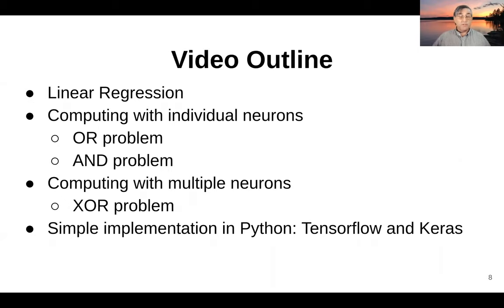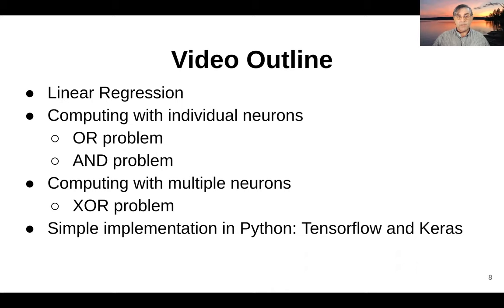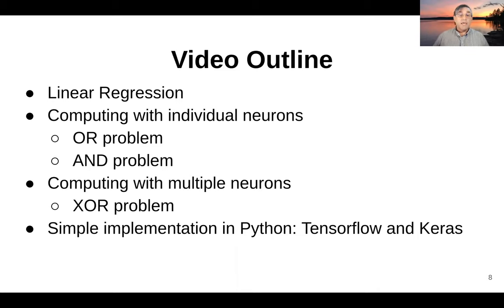The outline for this small sequence of videos is that we're first going to talk about linear regression so we're all on the same page. Then we'll branch into doing some nonlinear regression with individual neurons and solve a couple of different logic problems. This will help illustrate what individual neurons are capable of and what some of their limitations are. From there, we'll begin to build networks that involve multiple neurons, and we'll finish up by doing an implementation in Python using the TensorFlow and Keras packages.